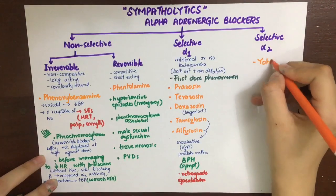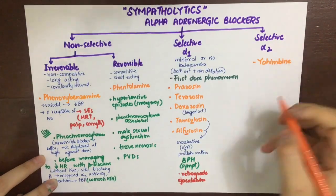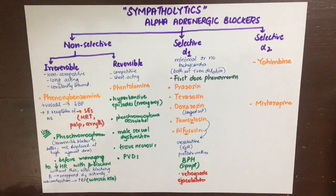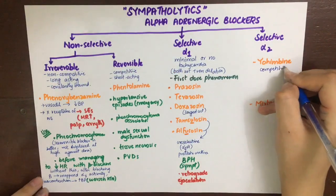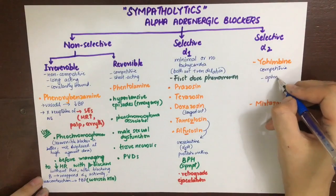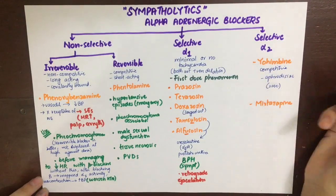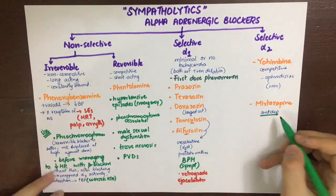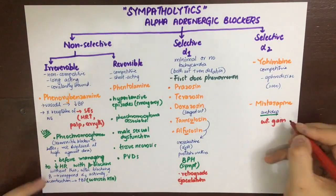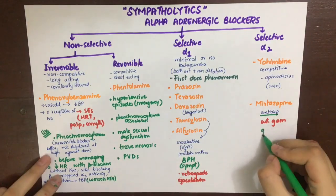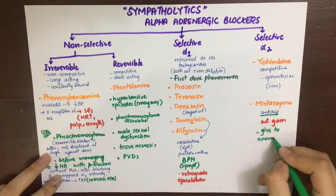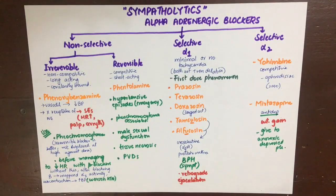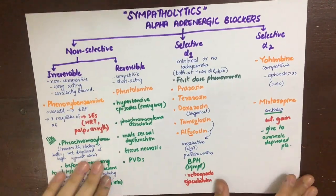Lastly among alpha blockers, we have selective alpha-2 blockers, which include yohimbine and mirtazapine. Yohimbine is a competitive antagonist of alpha-2 receptors, previously used as an aphrodisiac but now rarely used. Mirtazapine was mentioned in antidepressants and also causes weight gain, making it ideal for anorexic depressed patients to increase their appetite.